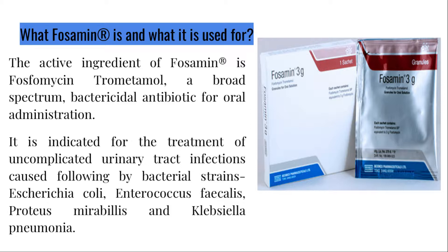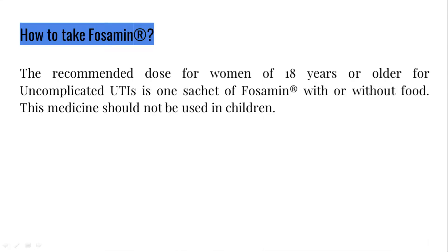It is indicated for the treatment of uncomplicated urinary tract infections caused by the following bacterial strains: Escherichia coli, Enterococcus faecalis, Proteus mirabilis, and Klebsiella pneumoniae. The recommended dose for women 18 years or older for uncomplicated UTIs is one sachet of Phosphomycin.